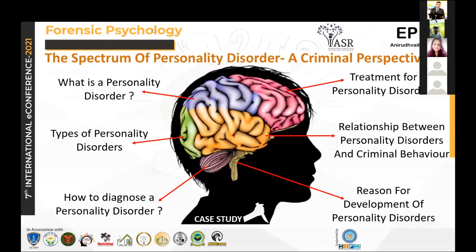The last in this category is obsessive-compulsive personality disorder, in which they are rigid and stubborn, inflexible about morality, ethics, and values, have a desire to control people, tasks, and situations, and have a preoccupation with details, orderliness, and rules.